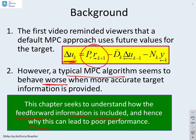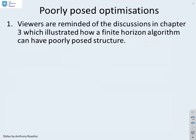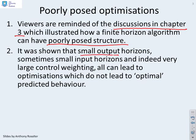We need to remind you about poorly posed optimizations. Viewers are reminded of the discussions in Chapter 3, which illustrated how a finite horizon algorithm can have a poorly posed structure. It was shown that small output horizons, small input horizons, and large control weighting can all lead to optimizations which do not give optimal predicted behavior. If that has gone too fast, you really do need to go and look at Chapter 3, where the arguments are developed quite slowly.